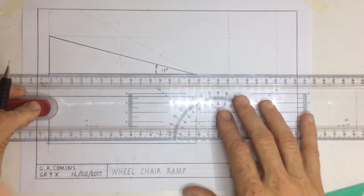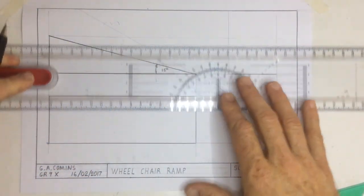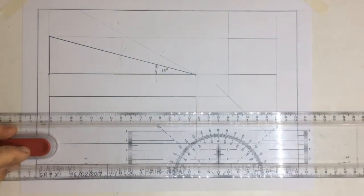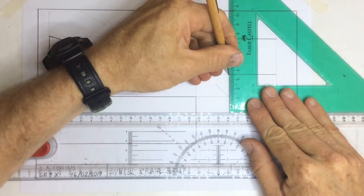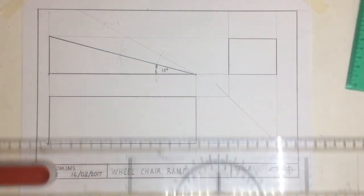Once I've got that in place, I am able to draw in dark lines representing the top and the base of the left view for my wheelchair ramp.